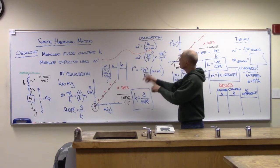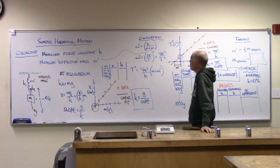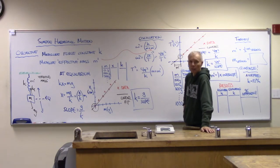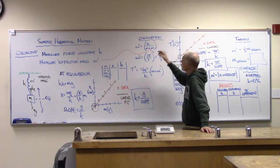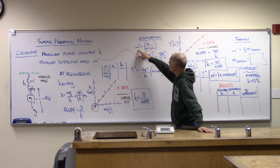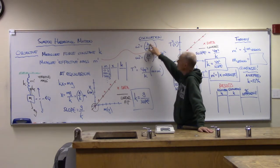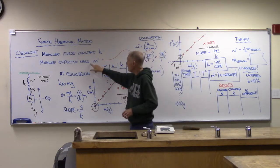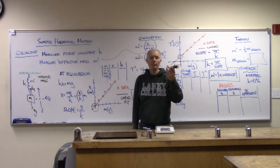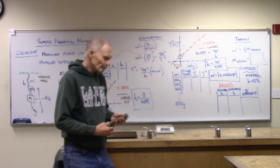We're mostly interested in the oscillation method — that's the new item we want to look at today. For simple harmonic motion type oscillations, we say that the angular frequency squared ω² equals the force constant k divided by the mass. In the oscillation case I am including what I'm calling an effective mass of the spring.